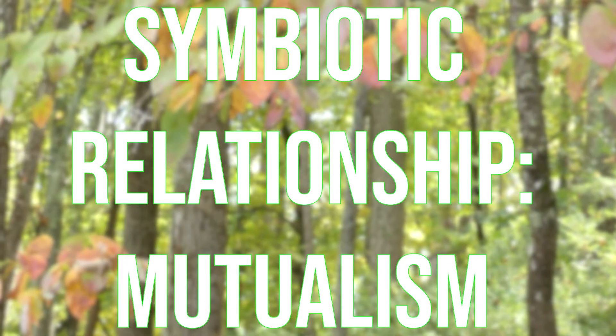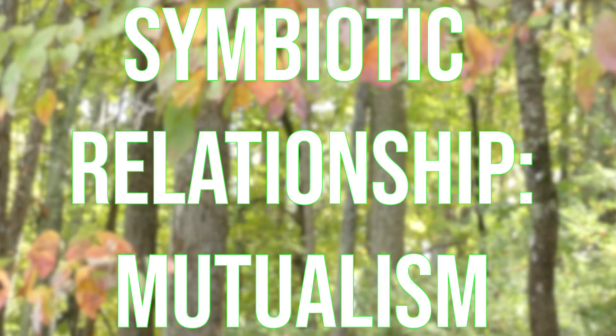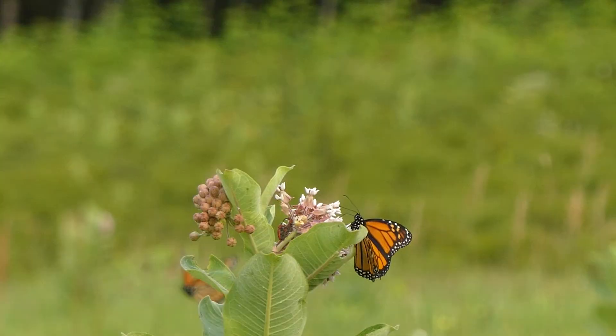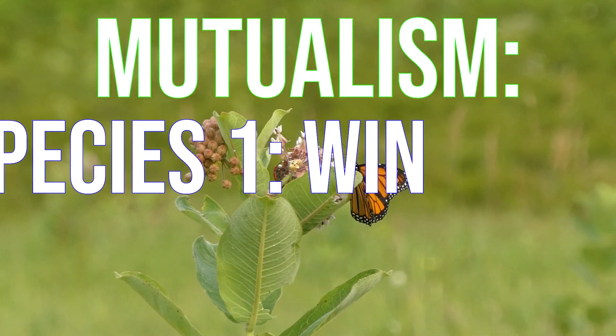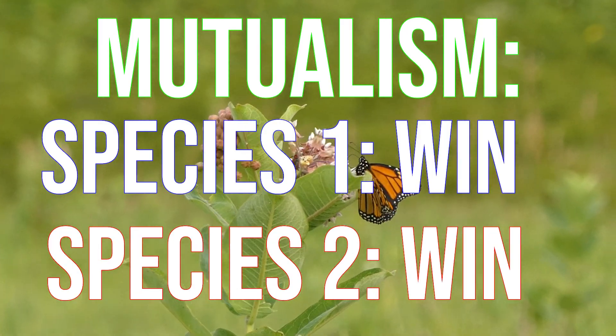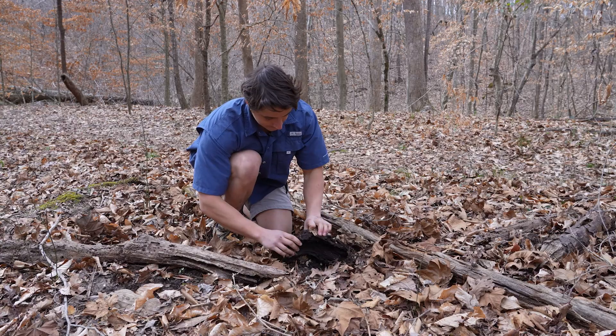The third and final kind of symbiotic relationship that we'll investigate in this video is mutualism. This is the kind of symbiotic relationship that most people think symbiosis actually is. In a mutualistic relationship, both organisms actually receive a benefit and neither of them are harmed. Unfortunately, these kinds of relationships are not very common in nature, so it might be hard for us to head out and observe one, but let's see what we can do.